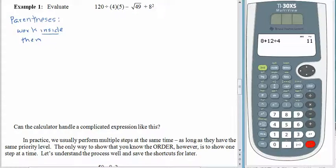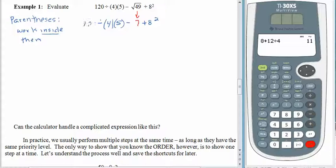Parentheses are done. The next thing we do is look for exponents and roots. We have one of each — a square root of 49 and an 8 squared. Exponents and roots have the same priority level, so we start with the one on the left. Square root of 49 is 7. After that, bring everything else straight down. We are working to demonstrate order — showing what happens first, what happens second, what happens third, and we can't do that if we have multiple steps happening in a line.